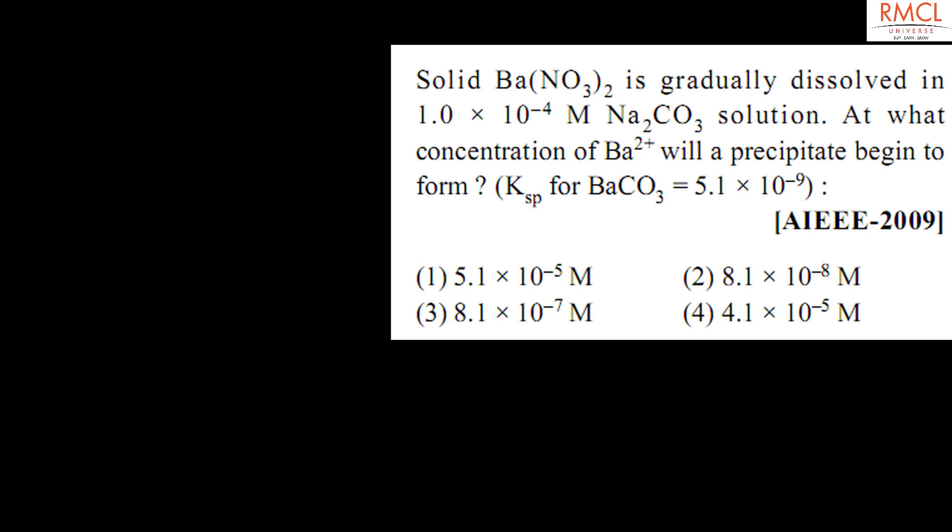The question asked in AIEEE 2009 is: solid barium nitrate is gradually dissolved in 1.0 × 10^-4 molar sodium carbonate solution. At what concentration of barium will the precipitate begin to form? Ksp of barium carbonate is 5.1 × 10^-9.